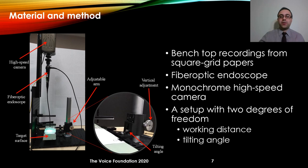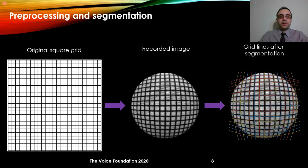To answer the research questions we use a set of benchtop recordings. The setup includes a high-speed camera connected to a flexible fiber optic endoscope, and an adjustable arm that moves up and down to change the distance between the target surface and the tip of the endoscope — which we call working distance. The setup also allows the target surface to be tilted, changing the angle between the endoscope and the target surface, which we call tilting angle. We used calibrated square grids as the target surface, and applied an automatic segmentation method to all grid lines.